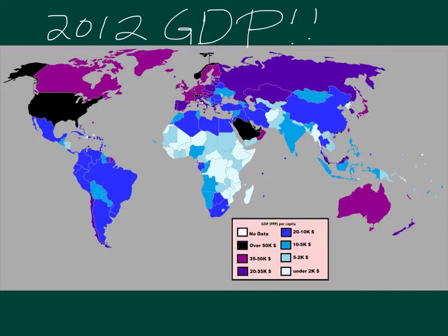Notice that the United States, Canada, Australia, Saudi Arabia, and Western Europe are considered very, very wealthy places in the world.